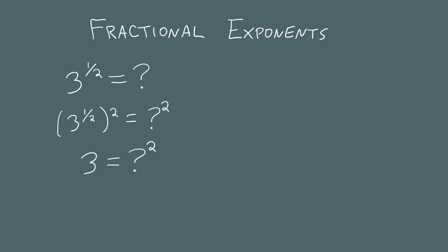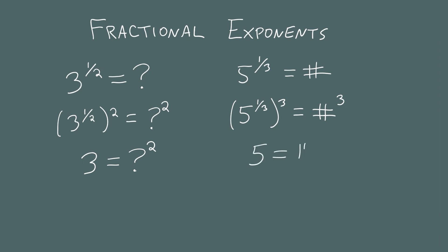What about 5 to the 1 third power? This is also some number we don't know yet. Similar to before, we're going to cube both sides. On the left, you multiply the exponents: 1 third times 3 is 1, so we're left with just 5. So 5 to the 1 third power is some number that, when cubed, should be 5. That gives you an intuition of what this means — when you see 5 to the 1 third, you think: what number, when cubed, gives 5?